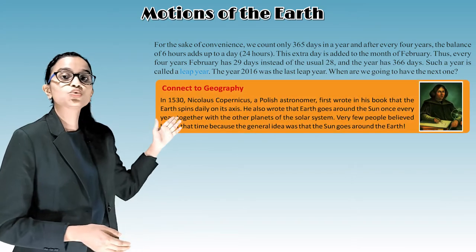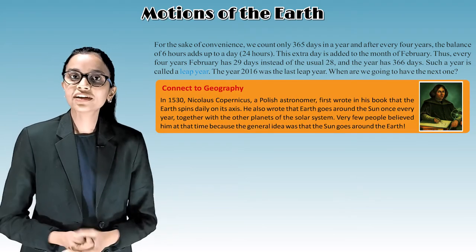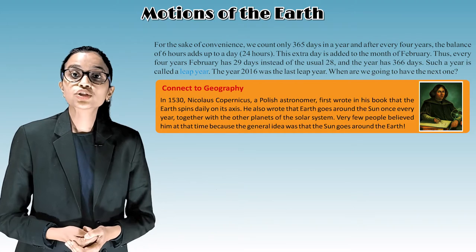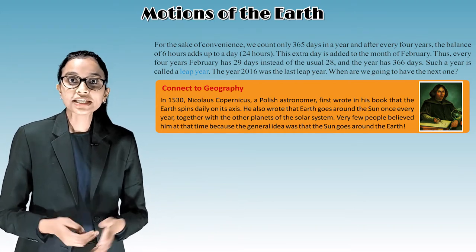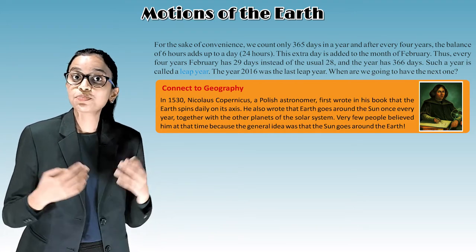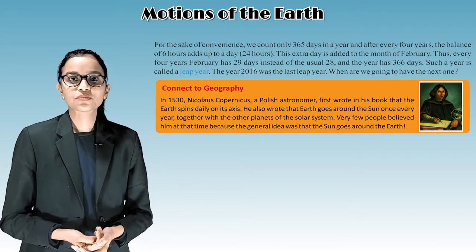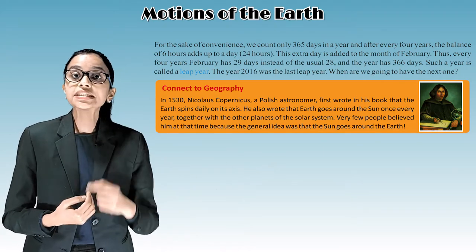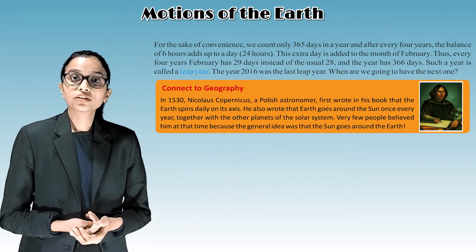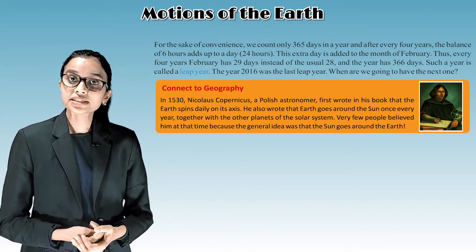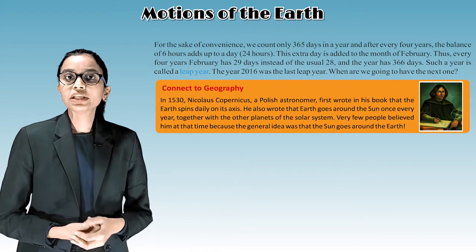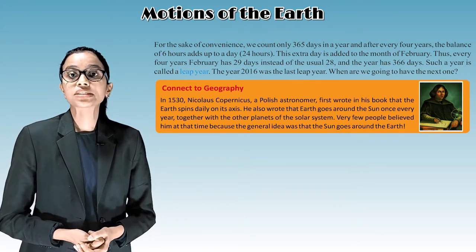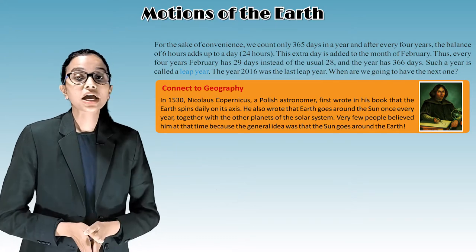In 1530, Nicholas Copernicus, a Polish astronomer, first wrote in his book that the earth spins daily on its axis. He also wrote that the earth goes around the sun once every year, together with the other planets of the solar system. Very few people believed him at that time because the general idea was that the sun goes around the earth.